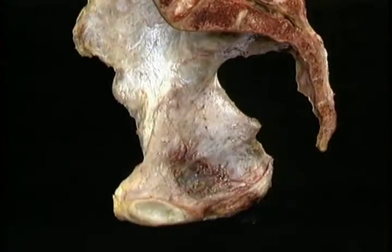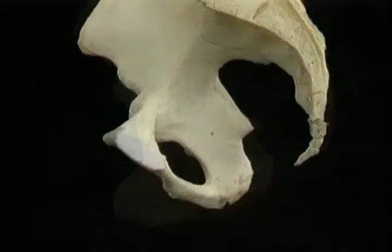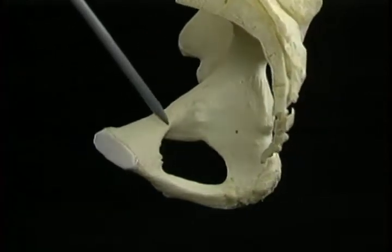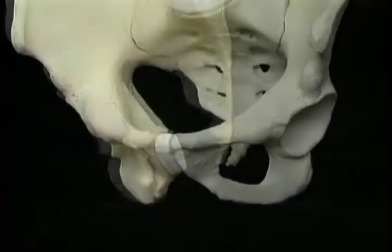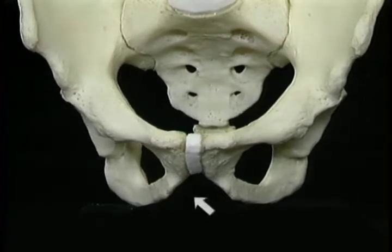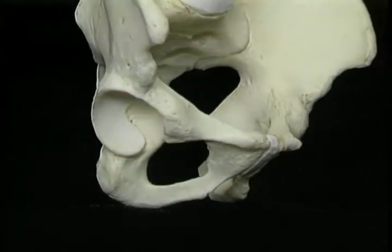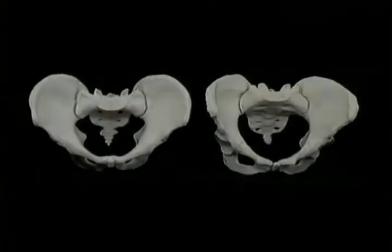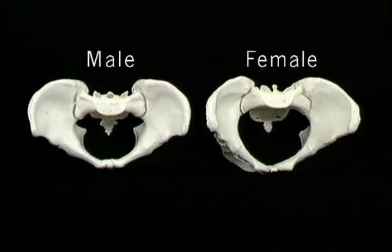The large hole in the lower part of the hip bone is the obturator foramen. In the living body it's largely closed off by the obturator membrane. This is the body of the pubis. The part of the hip bone below the obturator foramen is the ischiopubic ramus. The two ischiopubic rami meeting in front at the pubic symphysis form the pubic arch.